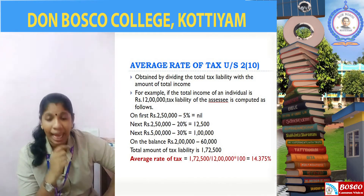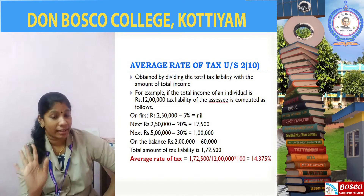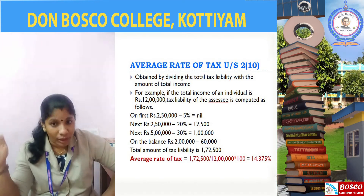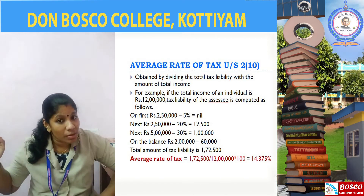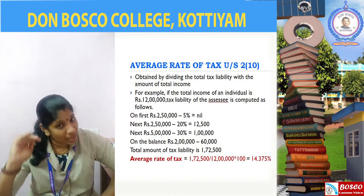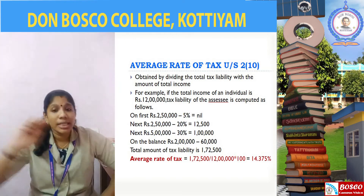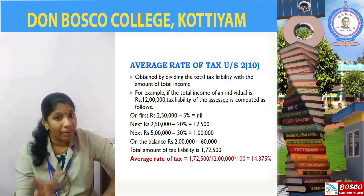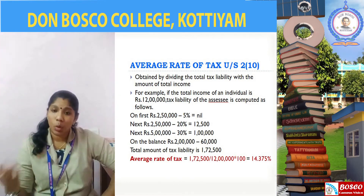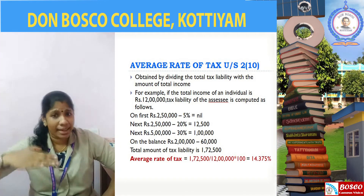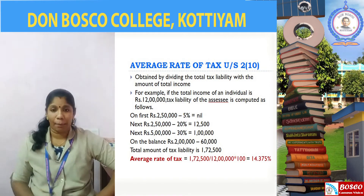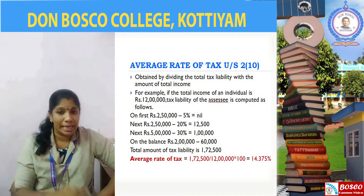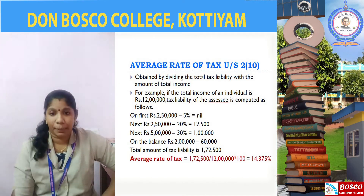Between 5 lakh to 10 lakh — the income in this slab is 5 lakh rupees. Since our total income is 12 lakh, the income falling between 5 lakh to 10 lakh is 5 lakh rupees. So 5 lakh at 20% — that is rupees 1 lakh.